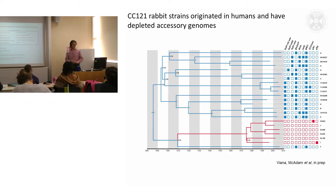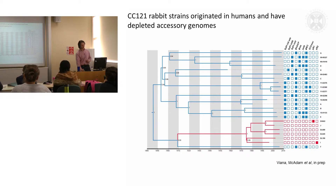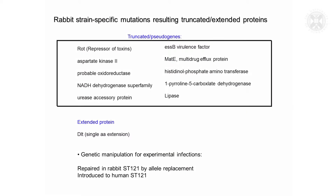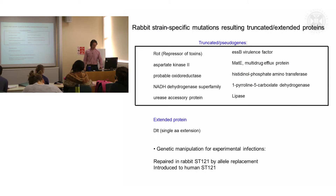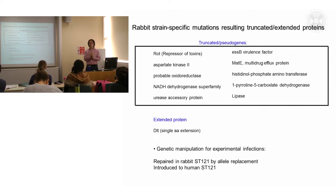That begs the question: how are they adapting to rabbits since the host jump, if they don't have those elements? We assume that what must have happened is that mutations occurred since the host jump event — along this branch here — which are really important for adaptation of Staph aureus to rabbits. By introducing some of these mutations into a human strain, or reversing them in a rabbit strain, we were able to narrow down which mutations were important in allowing these strains to colonise and infect rabbits.